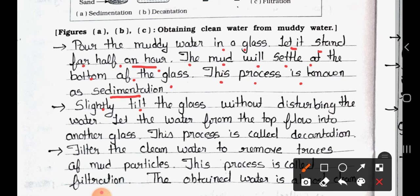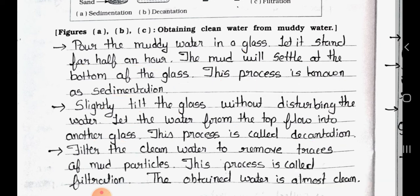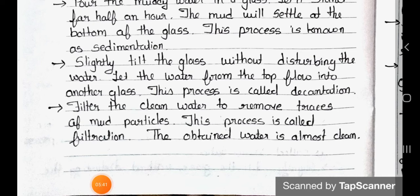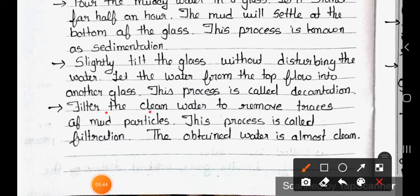Slightly tilt the glass without disturbing the water. Let the water from the top flow into another glass. This process is called decantation. Next, filter the clean water to remove traces of mud particles. This process is called filtration. The obtained water is almost clean.